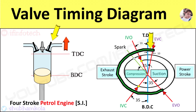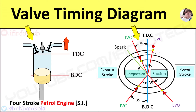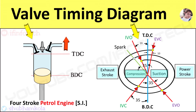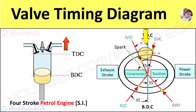The inlet valve opens at 20 degrees before TDC position of the piston for proper intake of air-fuel mixture, which also provides cleaning of remaining combustion residues in the combustion chamber. So there is 30 degrees of valve overlap between the inlet and exhaust valves before the new cycle starts.